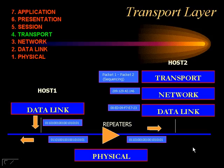The transport layer takes data from the session layer above it and sends it down to the network layer below it. The transport layer is layer 4, and this is where TCP and the UDP ports reside.